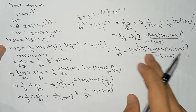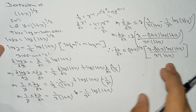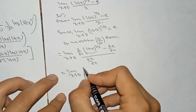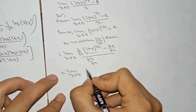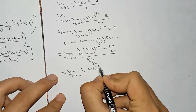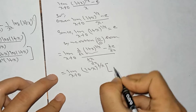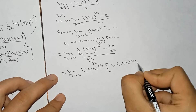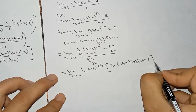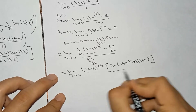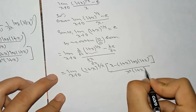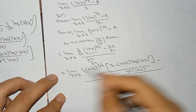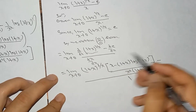Here is the derivative: we obtain limit x tends to 0 of (1 plus x) to the power 1 by x, then x minus (1 plus x) log(1 plus x), divided by x squared (1 plus x). The derivative of x is 1, and the derivative of e is 0.